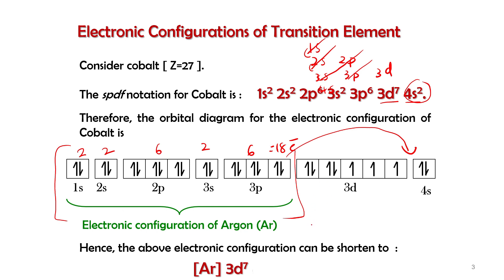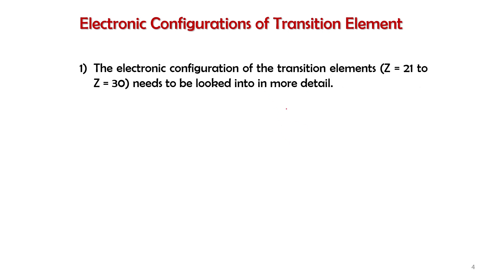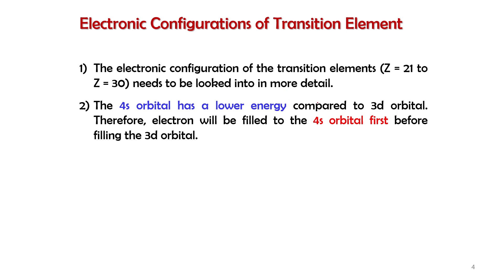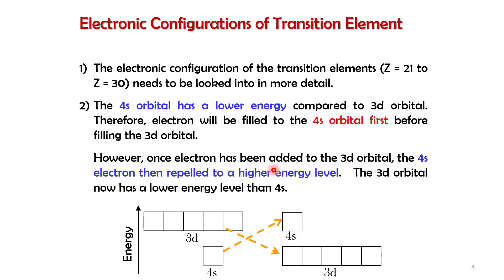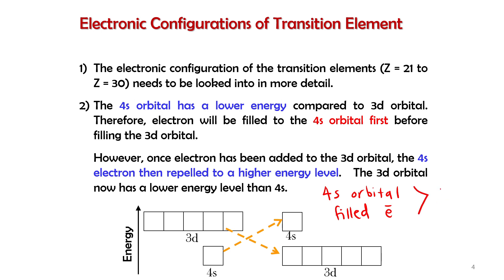So using the shorthand, we write [Ar] 3d⁷ 4s². Now, let's look in detail at how to write the electronic configuration. Between 4s and 3d, the 4s orbital has lower energy compared to 3d, so electrons fill 4s before 3d. However, once electrons are filled in both 4s and 3d, the electrons in 4s repel to a higher energy level — meaning filled 4s has higher energy than filled 3d.